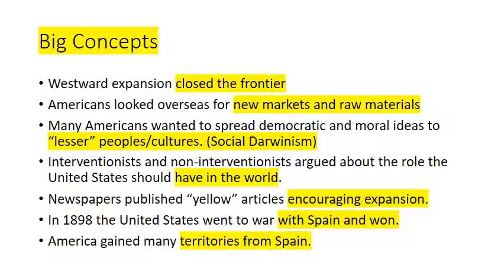Big Concepts: Westward Expansion closed the frontier. Americans looked overseas for new markets to sell manufactured goods and for raw materials and natural resources. Many Americans wanted to spread democratic and moral ideas to lesser peoples and cultures. This was part of the Social Darwinism Movement of the Gilded Age. Interventionists and non-interventionists argued about the role the United States should have in the world. Newspapers published yellow articles encouraging expansion.